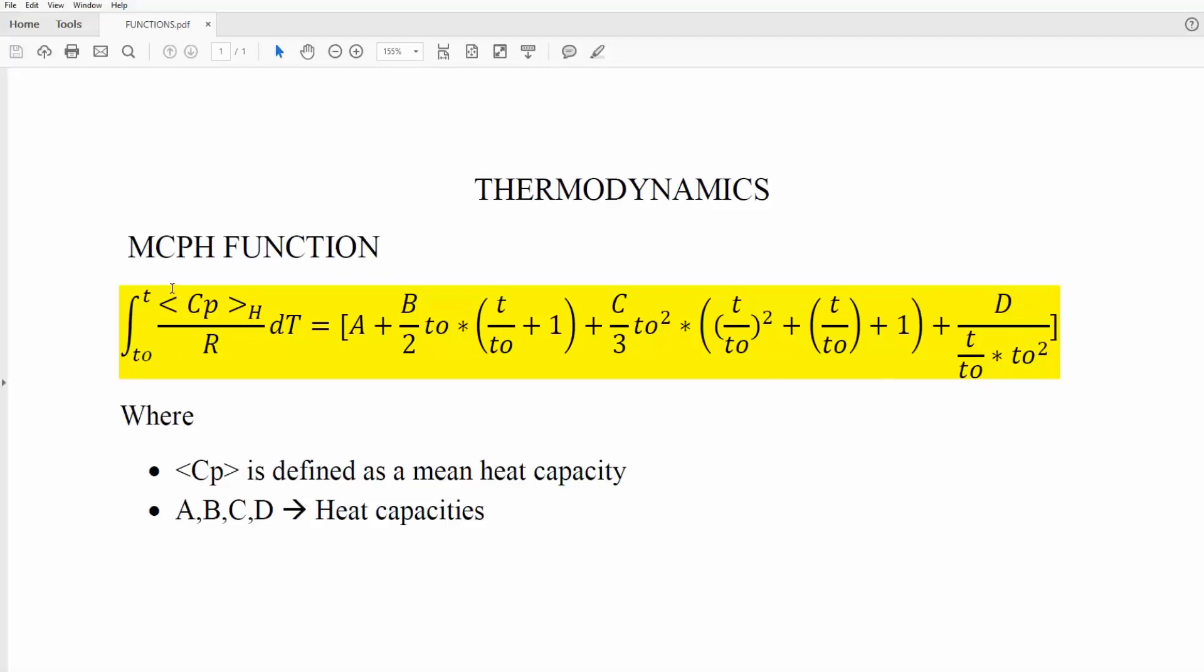Just as a side note, this square bracket over Cp is defined as a mean heat capacity, and the values A, B, C, and D are heat capacities, and you typically find those values in tables.